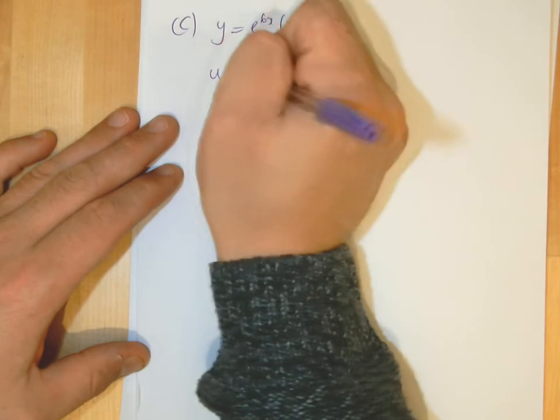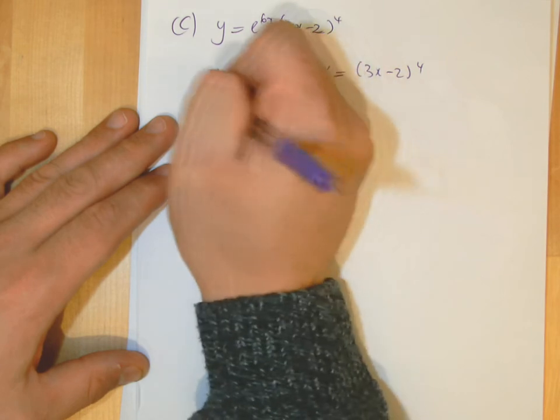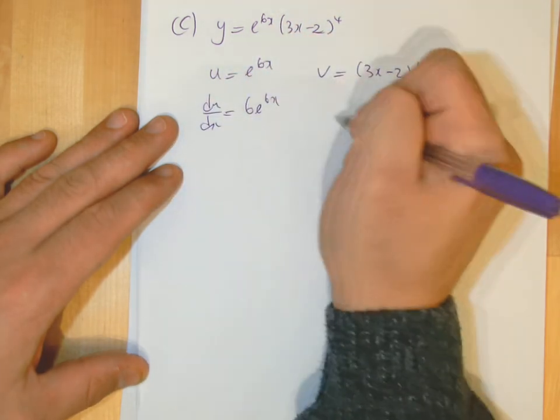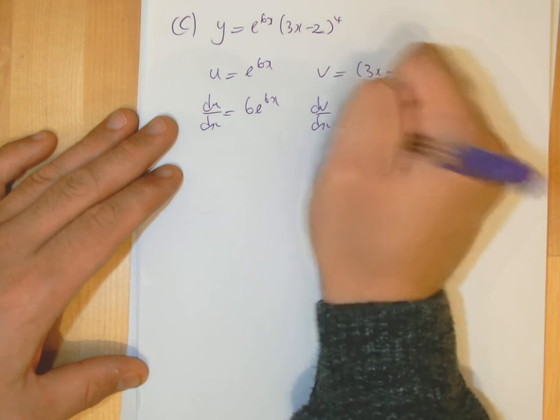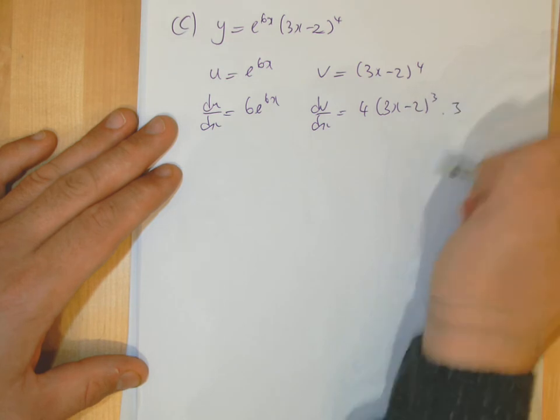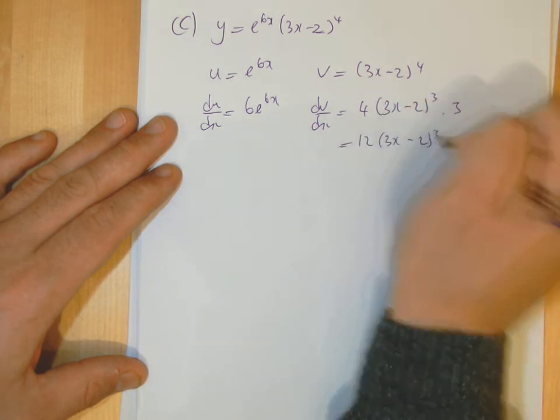So u is e to the 6x, v is 3x minus 2 to the power of 4. So du/dx is 6e to the 6x, and dv/dx is 4 times 3x minus 2 cubed, and then times the derivative, which is 3, so you get 12.